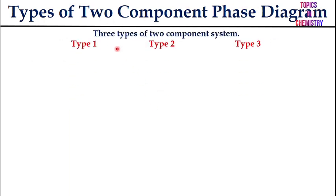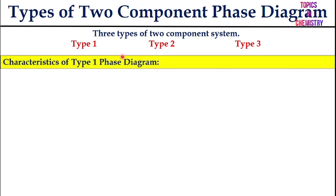Actually, three types of two-component phase diagrams are possible: Type 1, Type 2, and Type 3. Now let's discuss what the main features of each type are, starting with the characteristics of the Type 1 phase diagram.